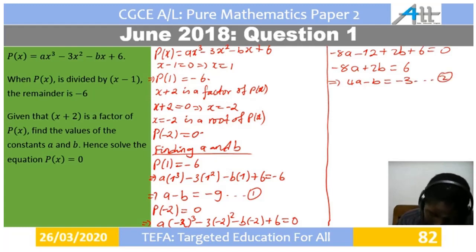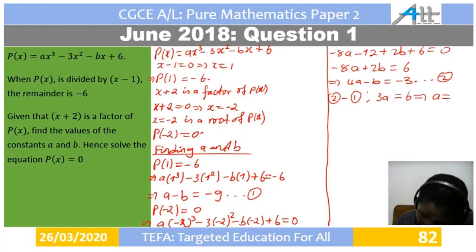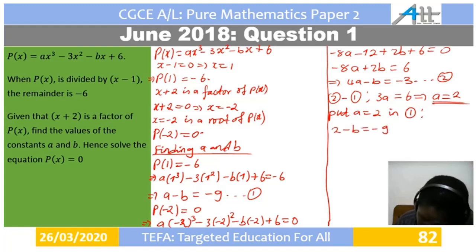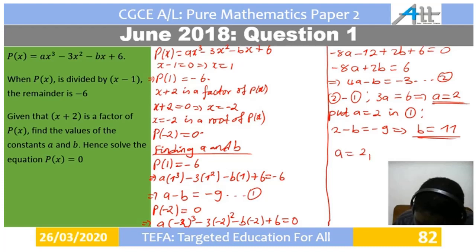Taking Equation 2 minus Equation 1: 4a minus a is 3a, and negative b minus negative b is 0. Negative 3 minus negative 9 is 6, so 3a equals 6, giving a equals 2. Substituting a equals 2 into Equation 1: 2 minus b equals negative 9, so b equals 11. Therefore a equals 2 and b equals 11.